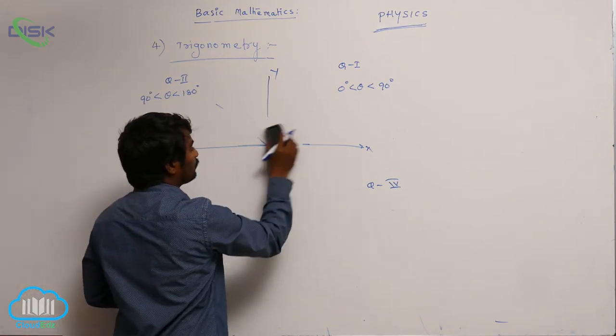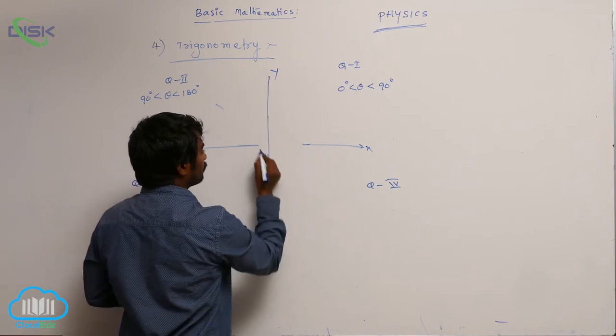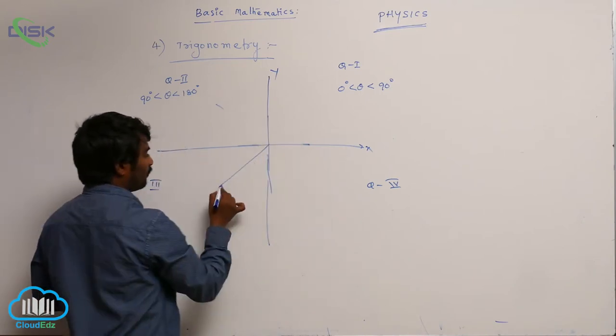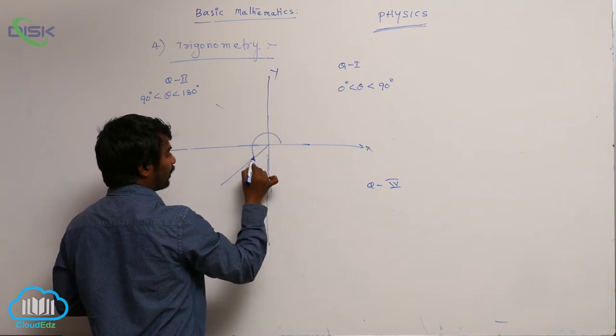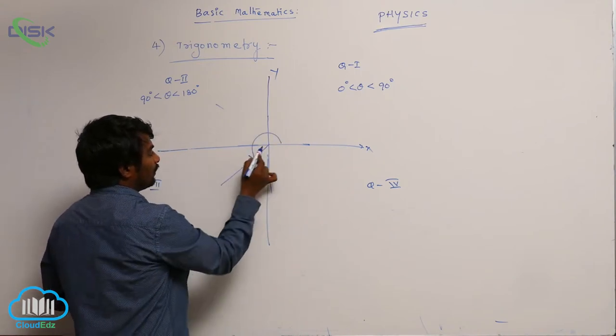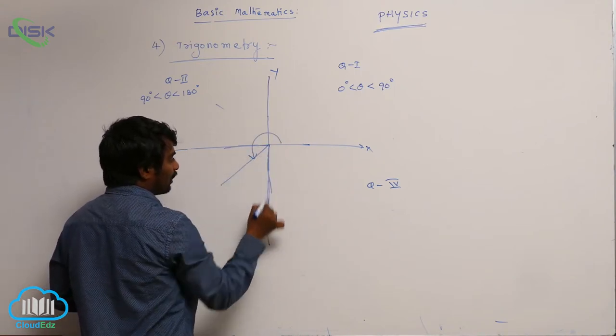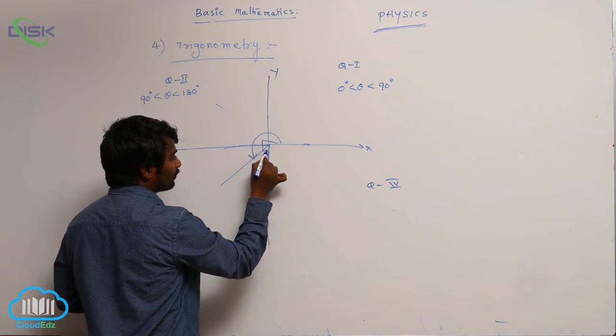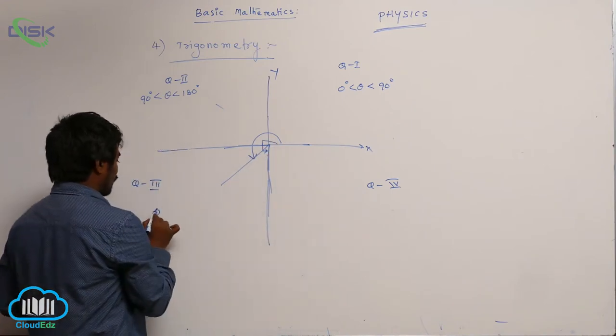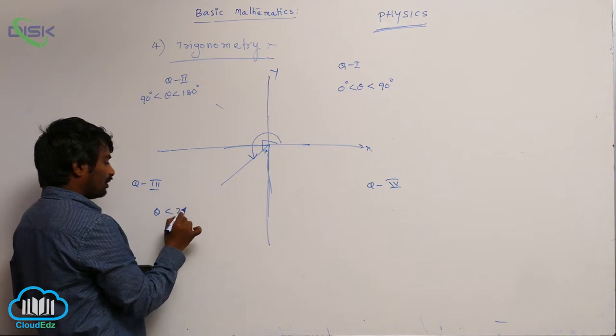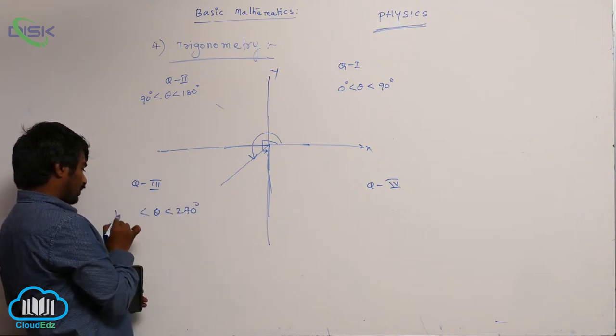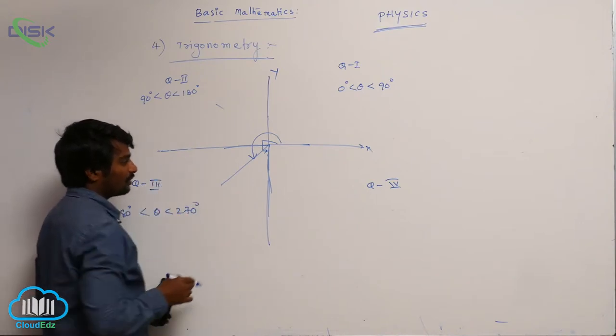Suppose if it lies here, this angle is greater than 180 degrees. Up to here it is 270. So theta is less than 270 degrees and greater than 180 degrees. It falls in the third quadrant.